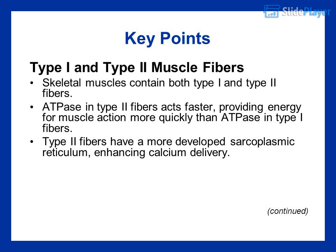Key points — type I and type II muscle fibers: skeletal muscles contain both type I and type II fibers. ATPase in type II fibers acts faster, providing energy for muscle action more quickly than ATPase in type I fibers. Type II fibers have a more developed sarcoplasmic reticulum, enhancing calcium delivery.